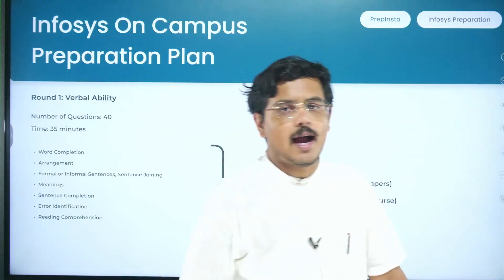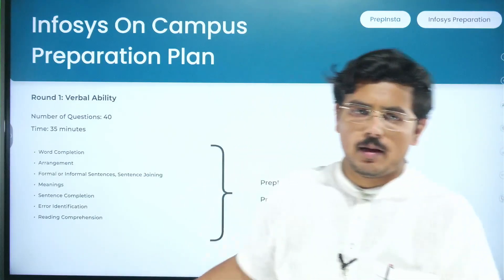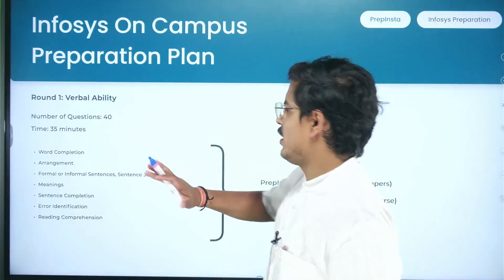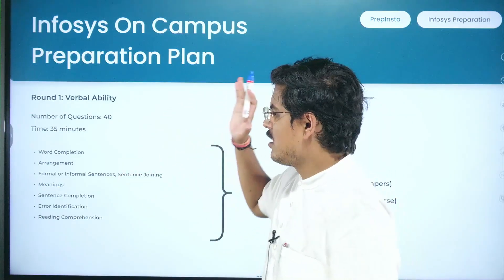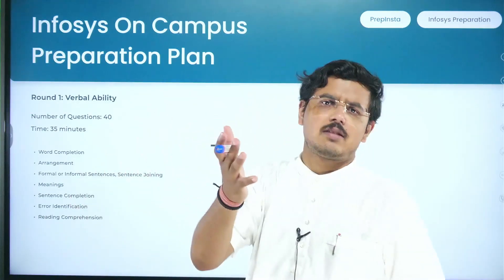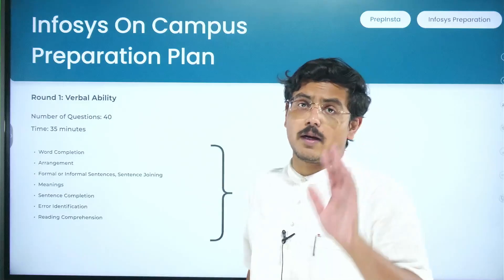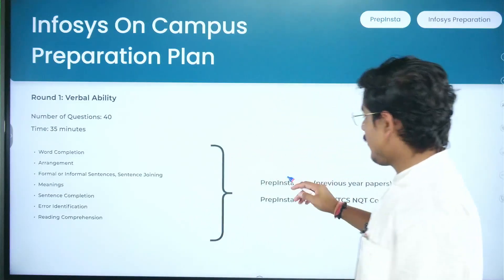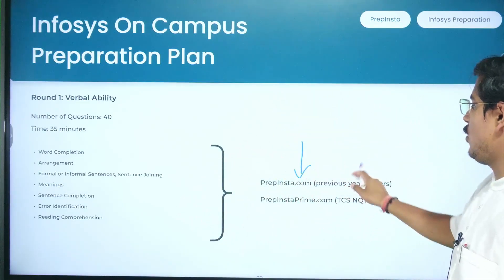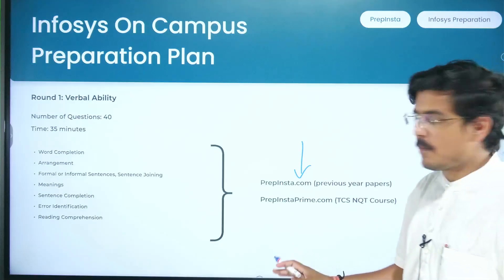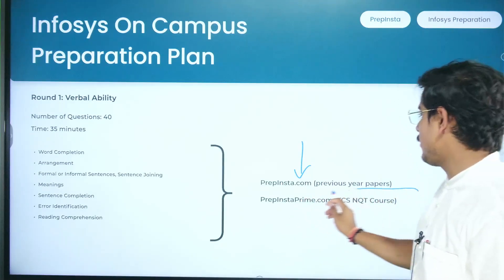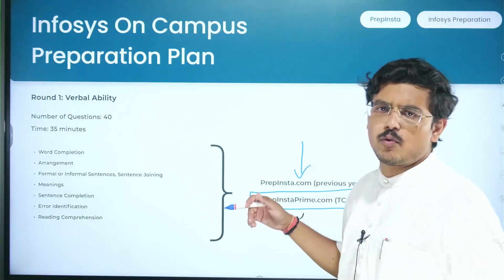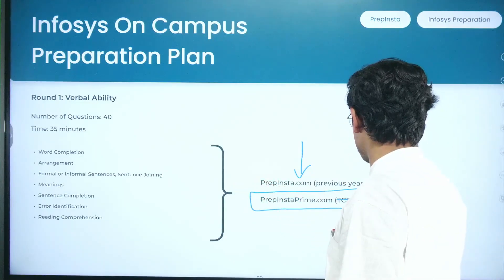In verbal ability you have 40 questions in 35 minutes. This is super easy if you're decent enough in English, but if you're struggling, you need to prepare it well. For that, you can go to prepinsta.com and check their previous year papers.